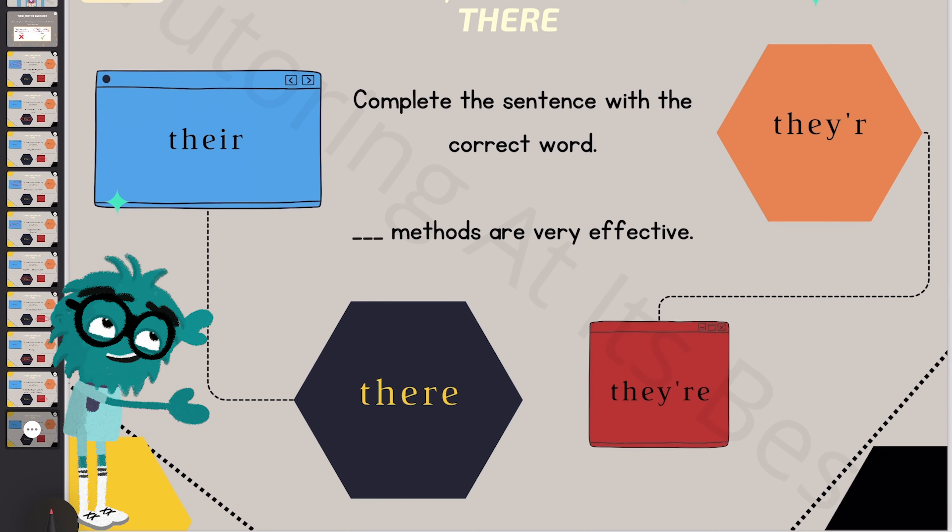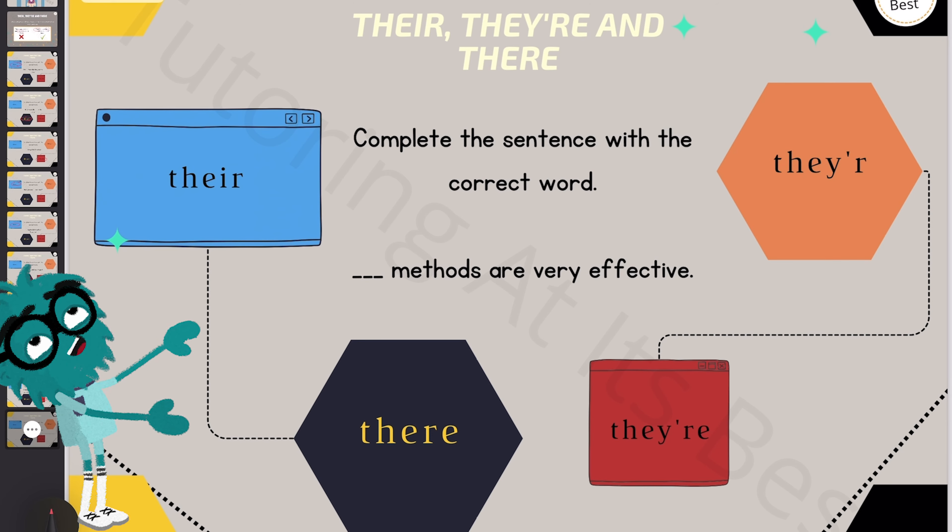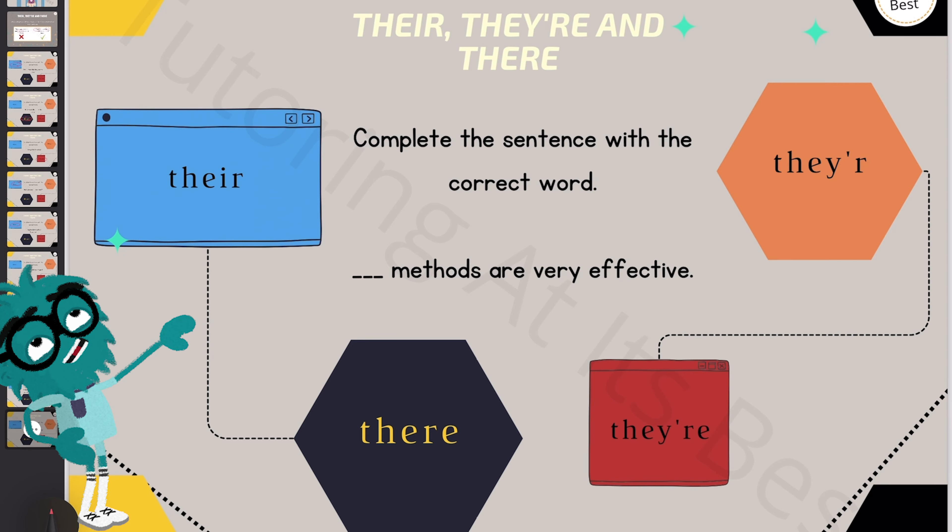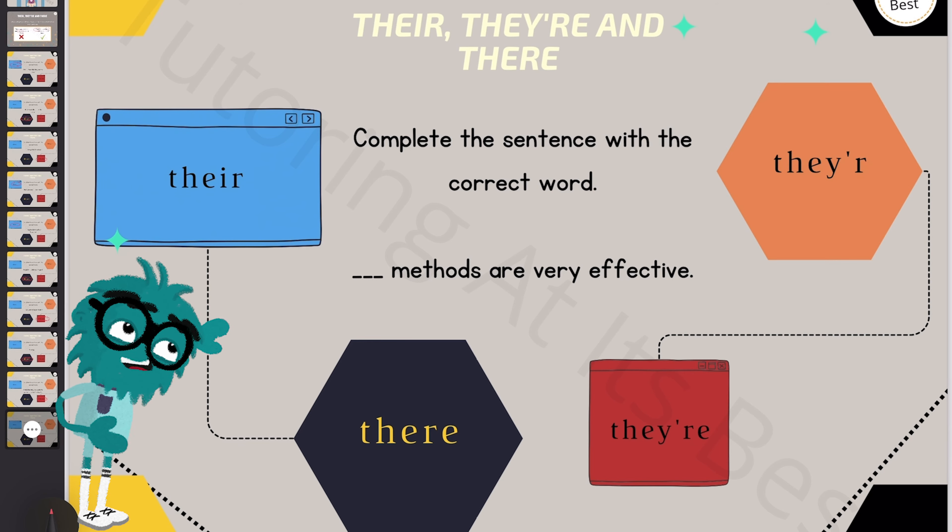And then over to the final question. Their methods are very effective. So we would here use a possessive adjective because the sentence states how effective someone's methods are. So it's their.